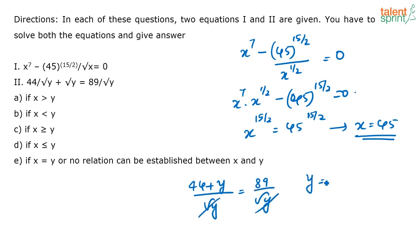Or again, what do you get? Y is equal to 89 minus 44, that is 45. So you can very clearly say that x is equal to y, and the answer option is option e.